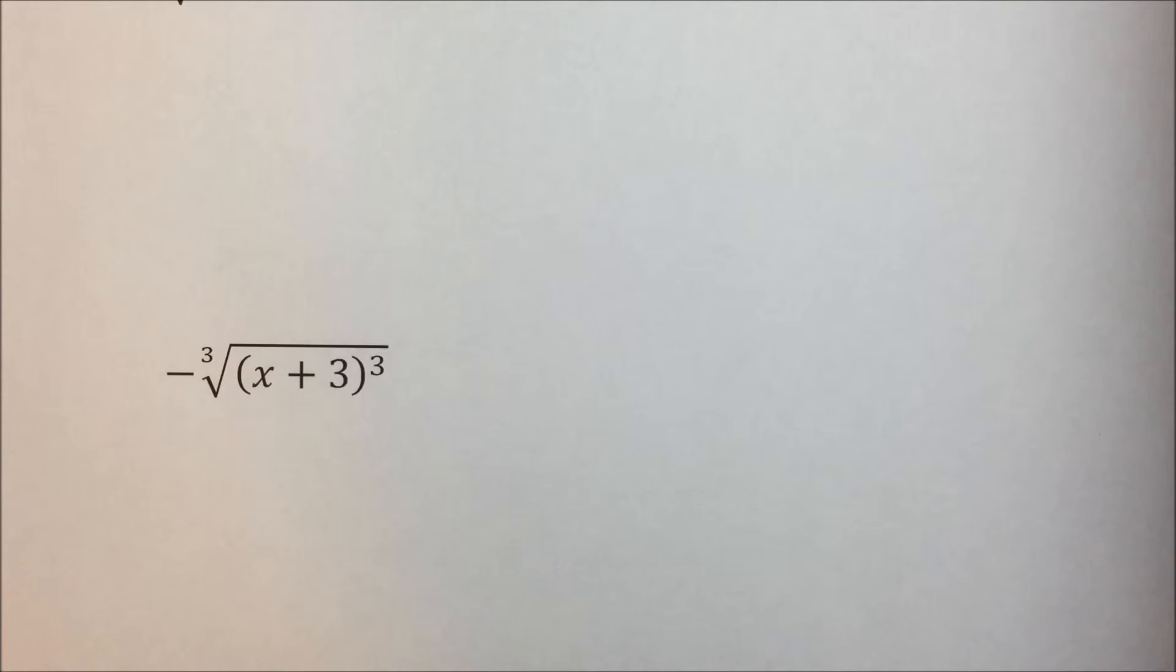Odd roots of positive numbers are positive, and odd roots of negative numbers are negative. We need an odd number of negatives to give us a negative number.